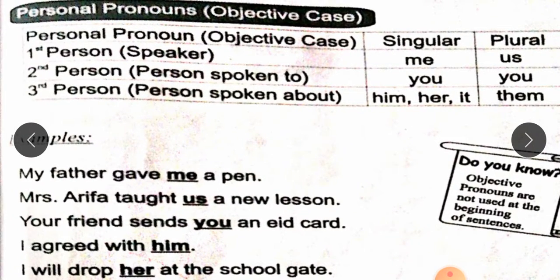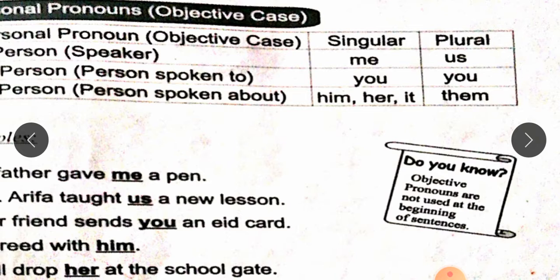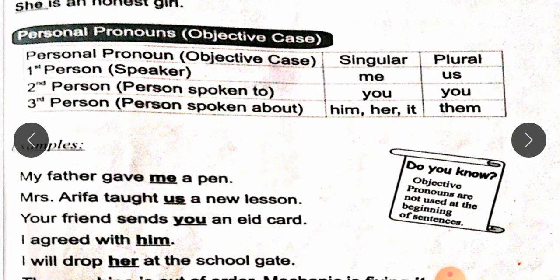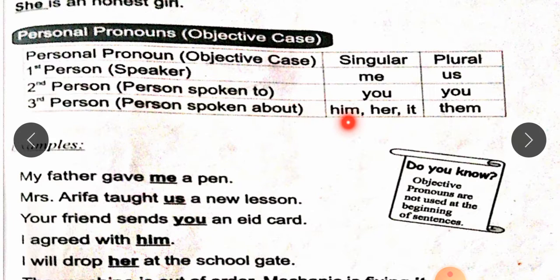Objective case. Objective pronouns are not used at the beginning of the sentence — keep that in mind. First person: I becomes 'me' in singular form, and 'we' becomes 'us'. You remain the same in both subjective and objective case. Third person: he becomes 'him', she becomes 'her', it remains the same, and they become 'them'.